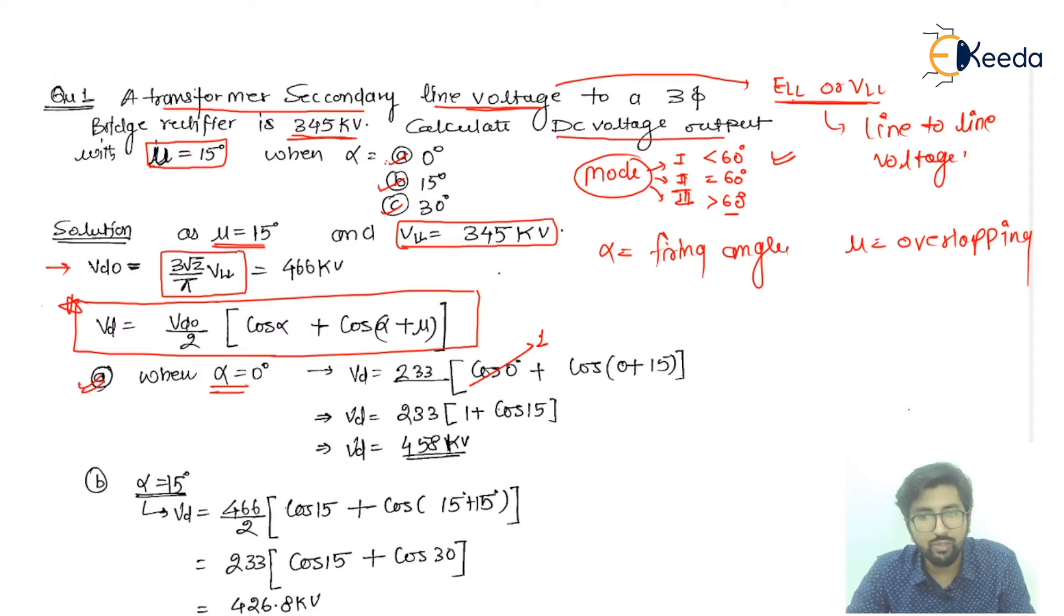Now we will move. So after solving, this is 233 into 1 plus cos 15, and then you will have 455 kilovolts.